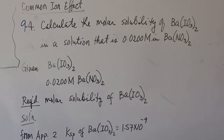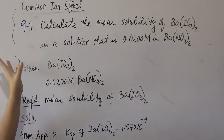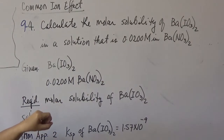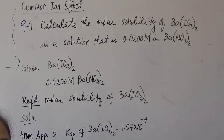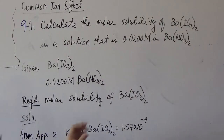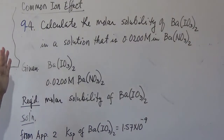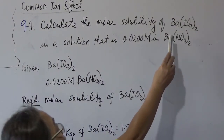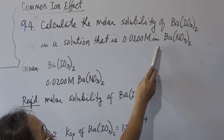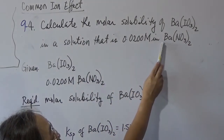Problem 9.4: barium iodate is dissolved in 0.02 molar barium nitrate — so the solvent is no longer water. Compare this to problem 9.3, where barium iodate was dissolved in water, versus problem 9.4, where barium iodate is dissolved in barium nitrate.